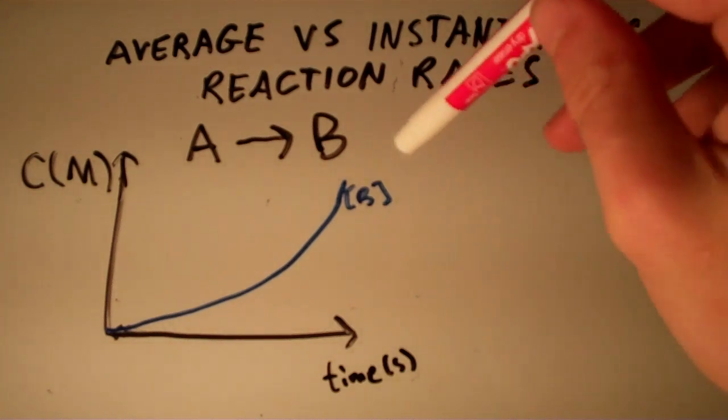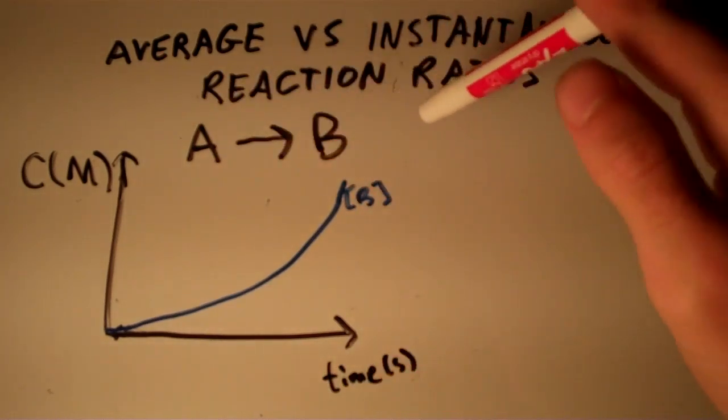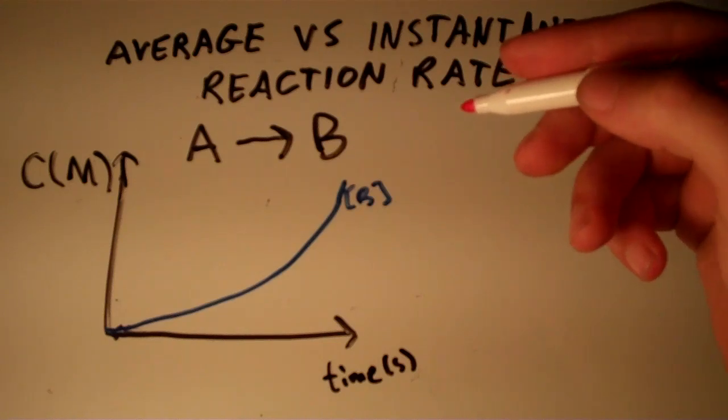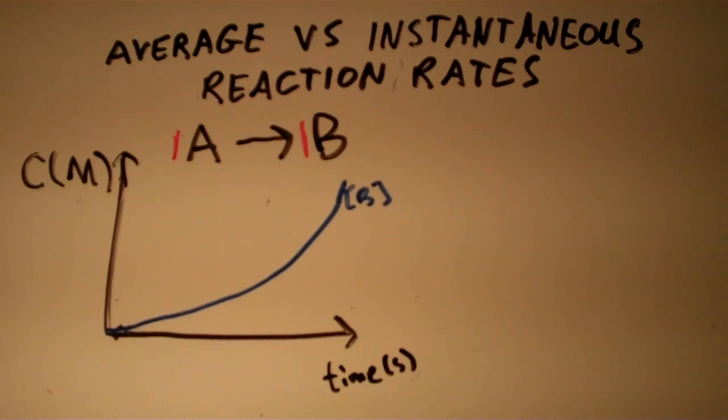Suppose we have this simple reaction scheme here where we have A forms B, one reactant, one product, and you can also assume that the coefficients in front of these are 1, just to keep it simple.